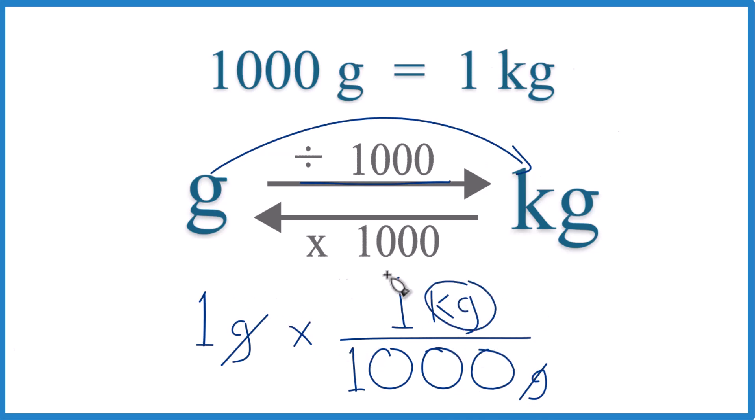So you take 1 times 1 kilogram, so that's just 1 kilogram, you divide that by 1,000, and you get that 0.001 kilograms.